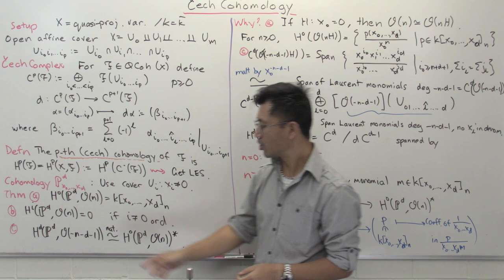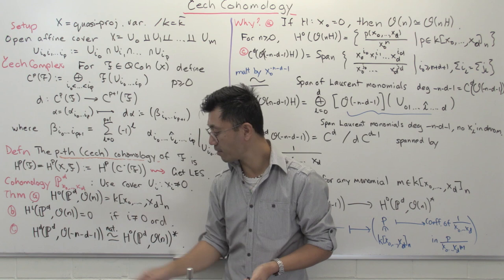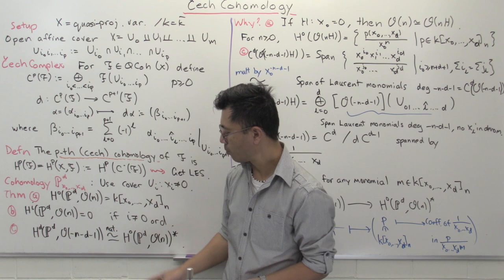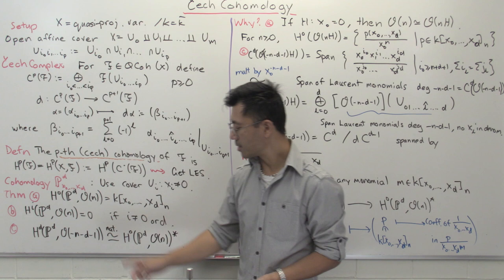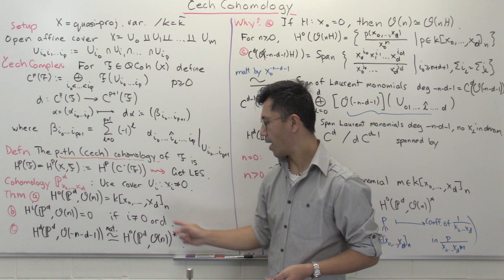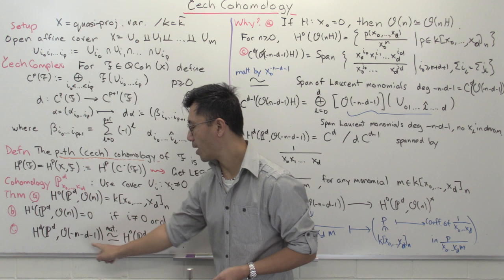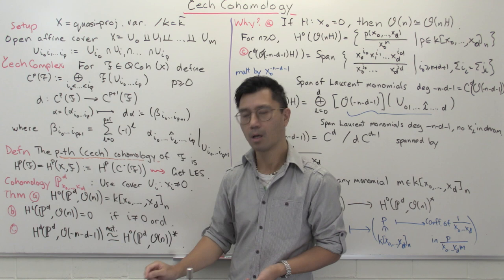Hᵈ, however, can be non-zero — something we expect, since the formula must work in the case d = 1 where H¹ is often non-zero for very negative line bundles. There is a Serre duality type result: Hᵈ(ℙᵈ, O(-n-d-1)) is naturally isomorphic to H⁰(O(n)) dualized. So there is a duality between this Hᵈ term for one line bundle and the H⁰ term for another. Note that the two are not quite negatives of each other — it's a shift of the negative, shifted by d+1, the number of variables.